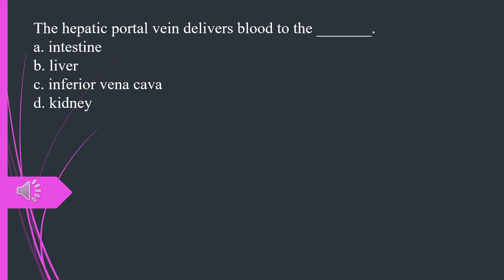The hepatic portal vein delivers blood to the A. Intestine B. Liver C. Inferior vena cava D. Kidney. The answer is B, liver.